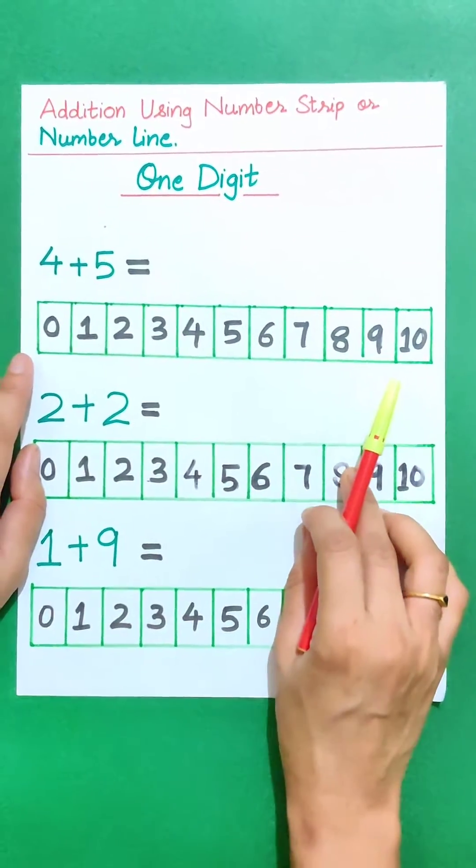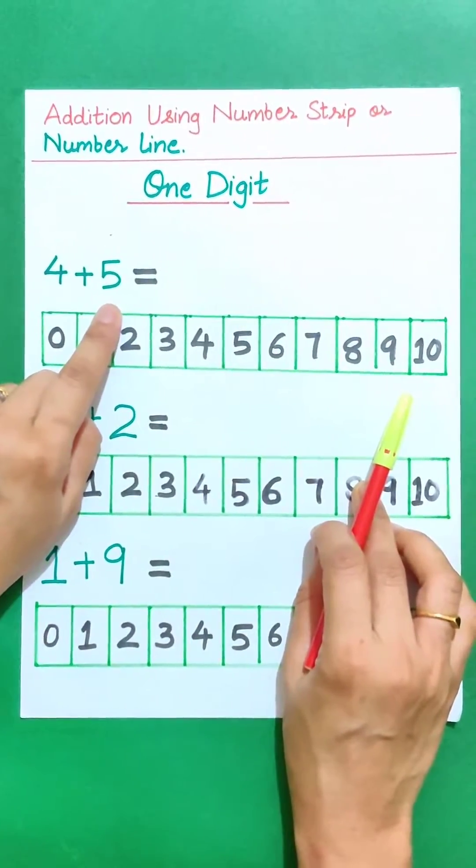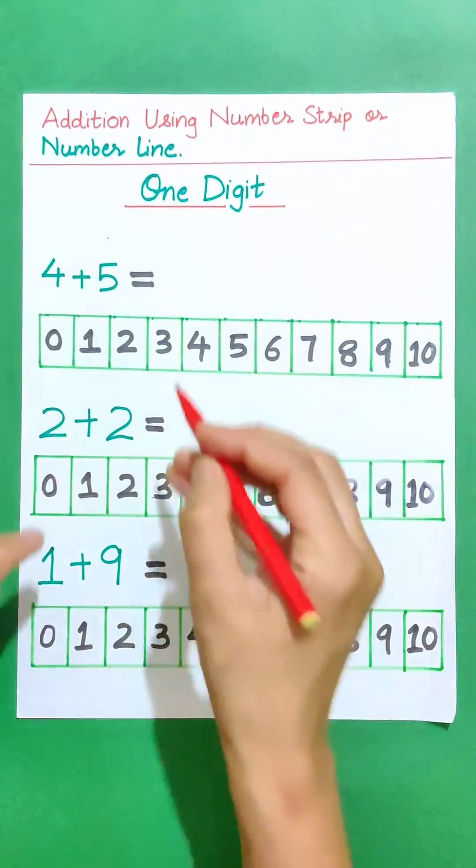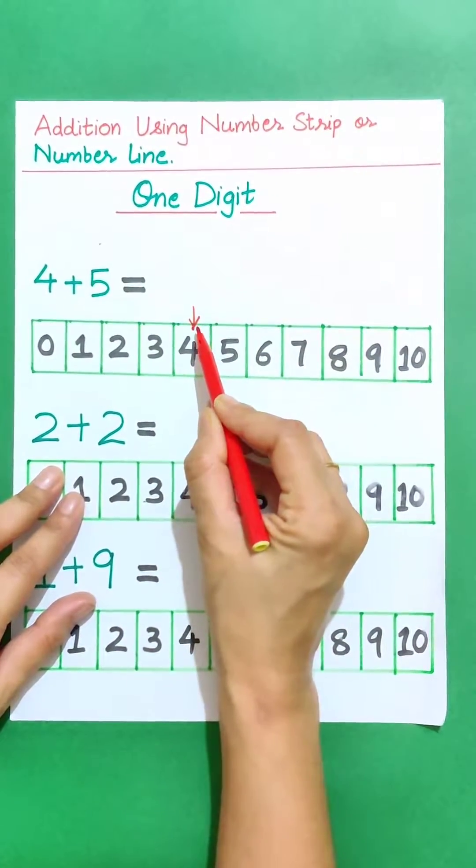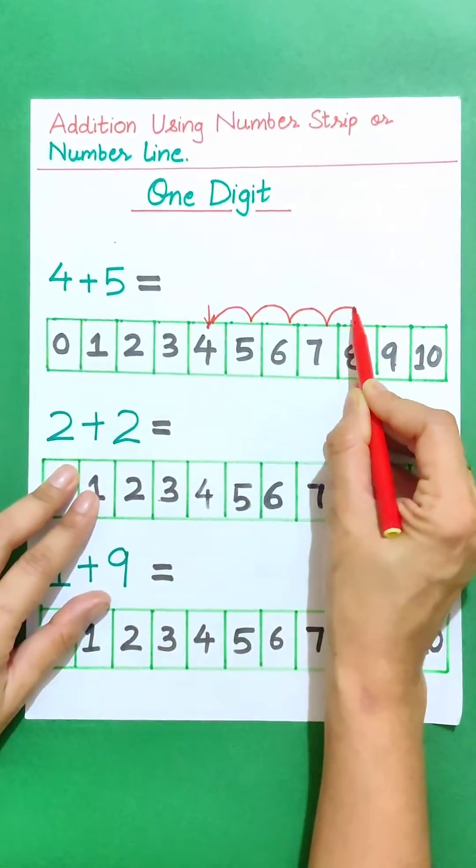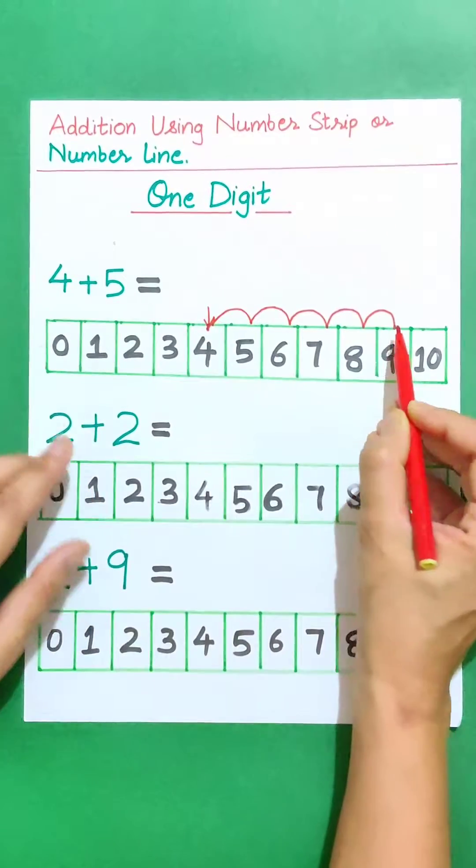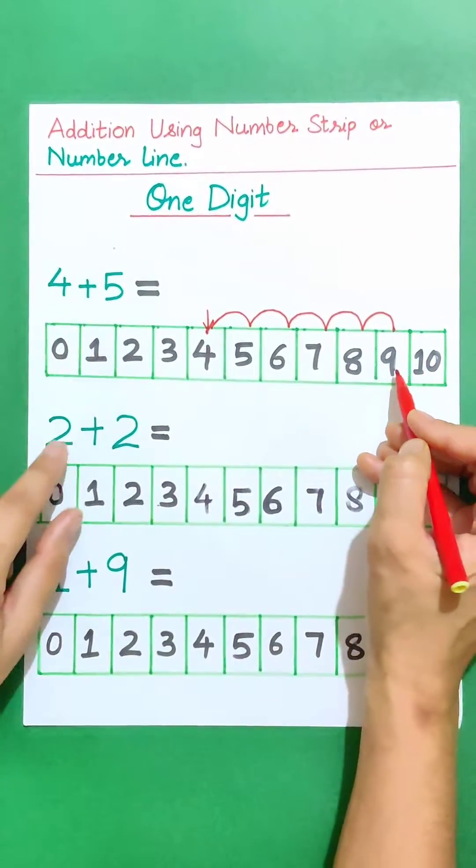So let's start adding number 4 and 5. Start from number 4 and then jump forward to 5 steps. 1, 2, 3, 4 and 5. So the sum of 4 and 5 is 9.